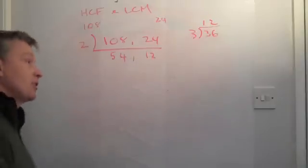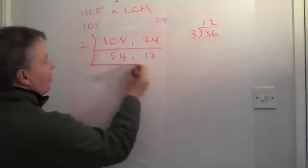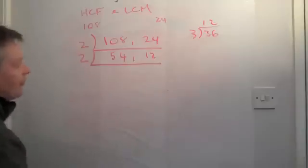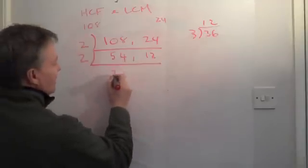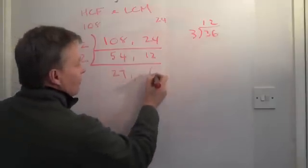Now, if I like, because it makes my life a bit easier, I'm going to do 2 again. So, 2 again. 2 into 54 will go 27 times. And 2 into 12 will go 6 times.